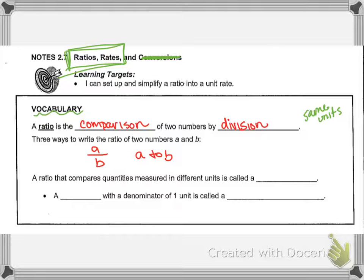We can do that as a fraction. We can literally write the word A to B to show the ratio, or we can simplify it and make it a colon to show that this is a comparison of A and B.